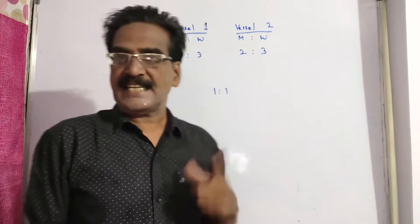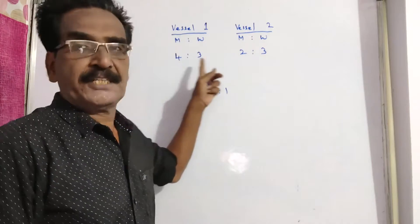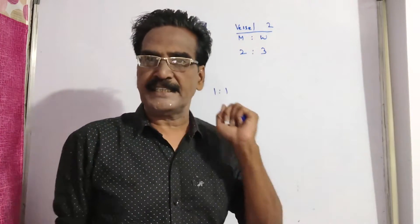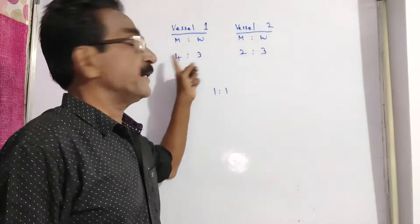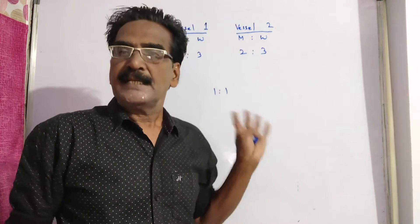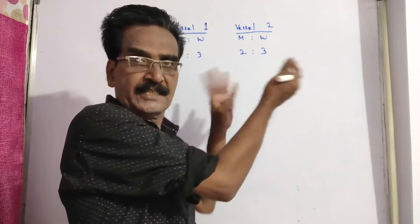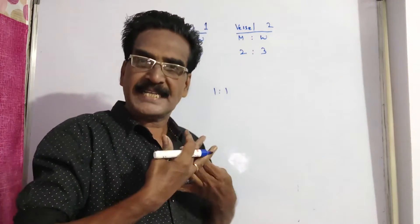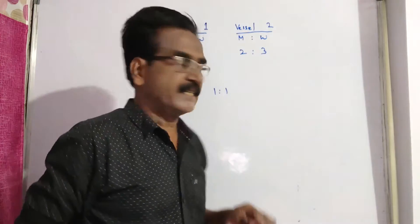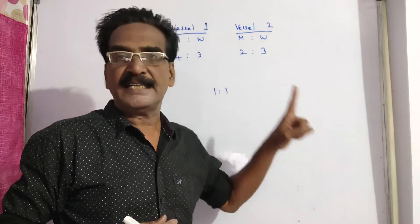Hi friends, good morning. Please look at the next problem in allegation mixtures. Here two vessels contain milk and water in the ratio 4 is to 3. Two vessels are equal quantity. Two vessels contain milk and water in the ratio 4 is to 3 and 2 is to 3 respectively. The question is: in what ratio must these two mixtures be mixed to get a new mixture in which there is half water and half milk?